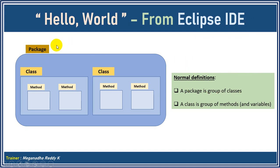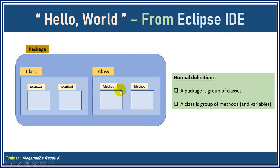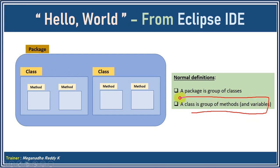Similarly in Java, a package is a group of classes and a class is a group of methods and variables. Just keep this in mind for now — we are going to see this in detail in object-oriented programming. A package is group of classes, a class is group of methods and variables.